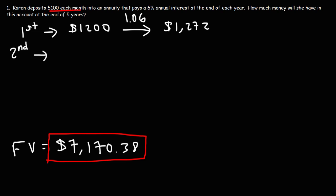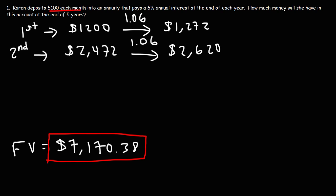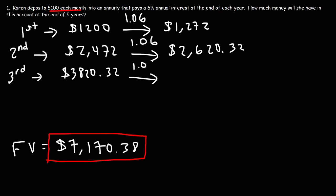In year two she deposits another $1,200. Adding 1272 plus 1200 gives $2,472 — the account value before interest. At the end of year two, multiplying 2472 by 1.06 gives $2,620.32. At the beginning of year three, after another $1,200 deposit, she has $3,820.32.